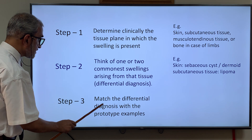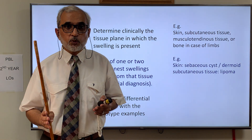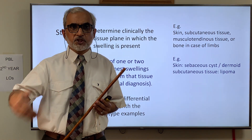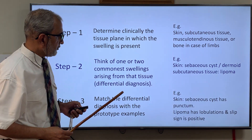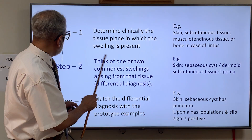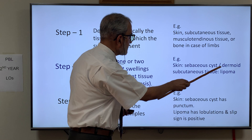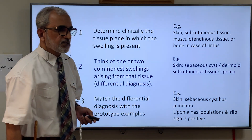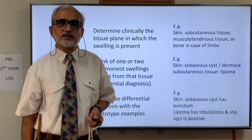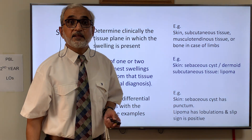Step three is important: match the differential diagnosis with prototype examples. Each swelling has certain characteristics, and if a swelling has those characteristics, we are pretty sure of the diagnosis. For example, a sebaceous cyst in the skin has a punctum — so any skin swelling with a punctum would be a sebaceous cyst. Similarly, in subcutaneous tissue, a lipoma has lobulation and a slip sign; any subcutaneous swelling with lobulation and a slip sign has to be a lipoma.